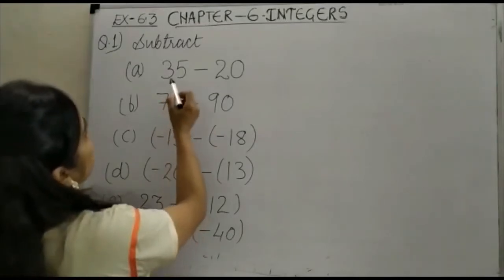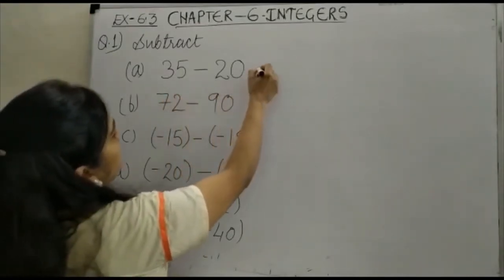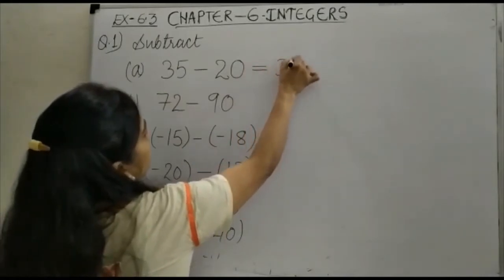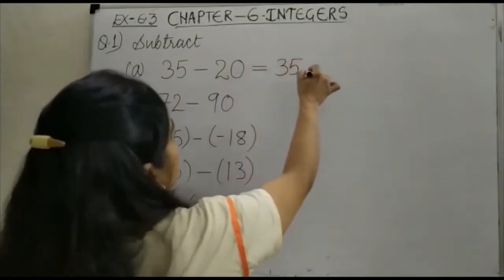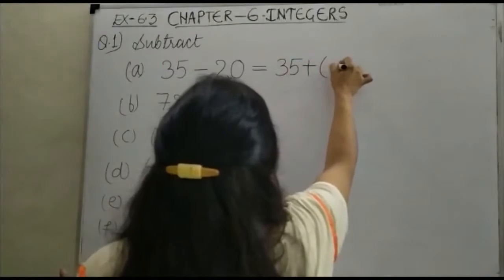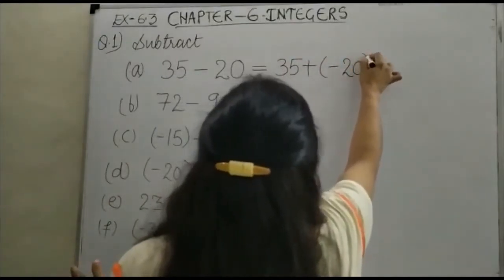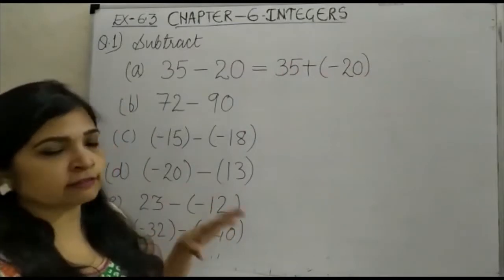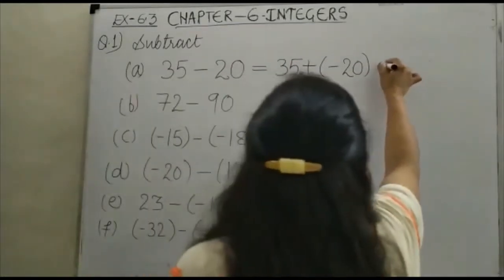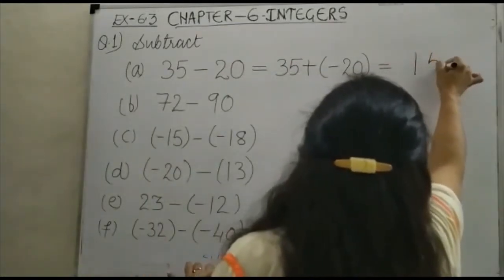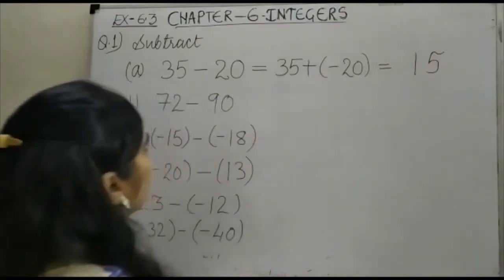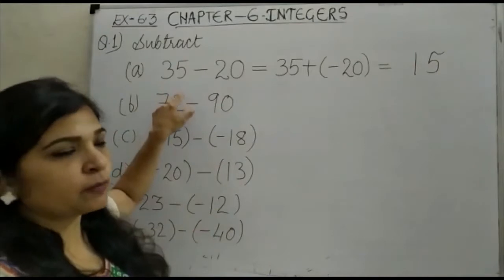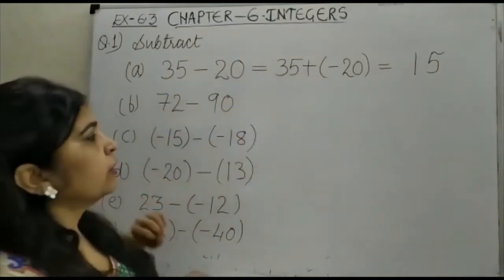Here it is given the first question is 35 minus 20. This will be as simple as your addition, that is 35 plus minus 20. As I told you, plus and minus when we do then it is minus 15. Now just see which number is greater, 35, and what is the sign of 35? Positive. So it will be positive 15.